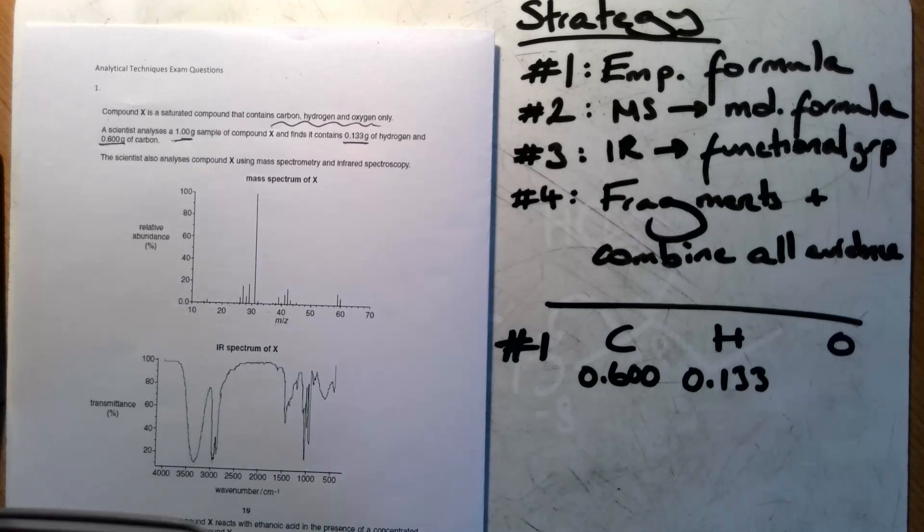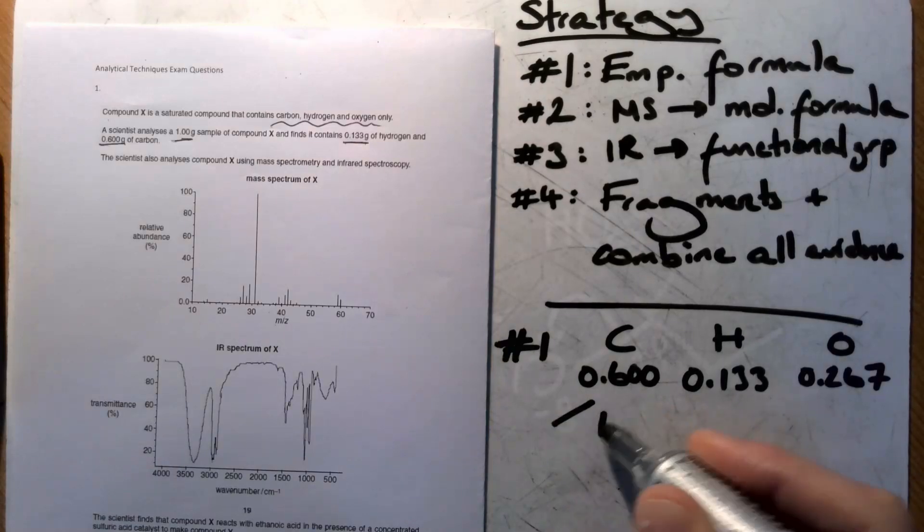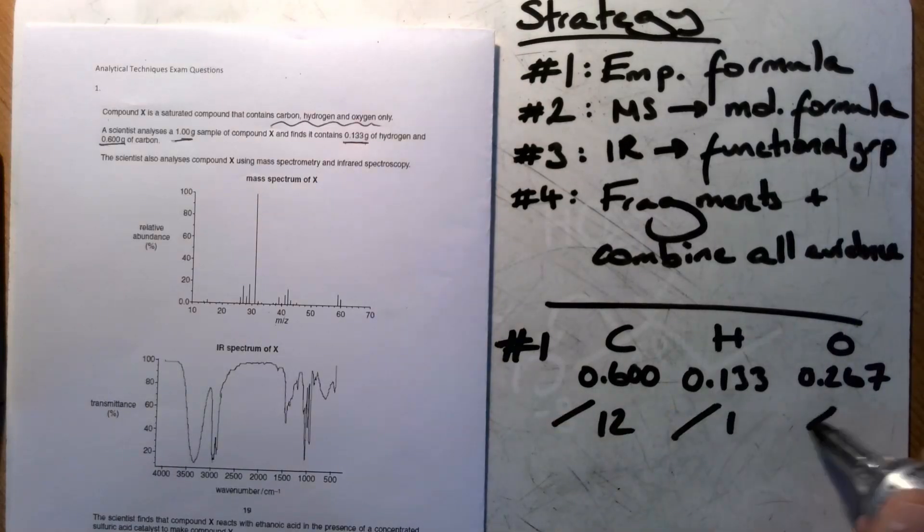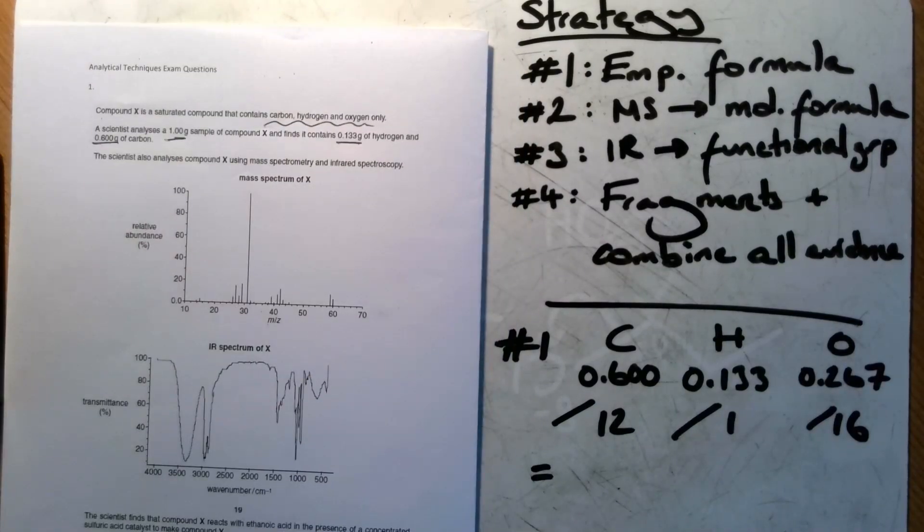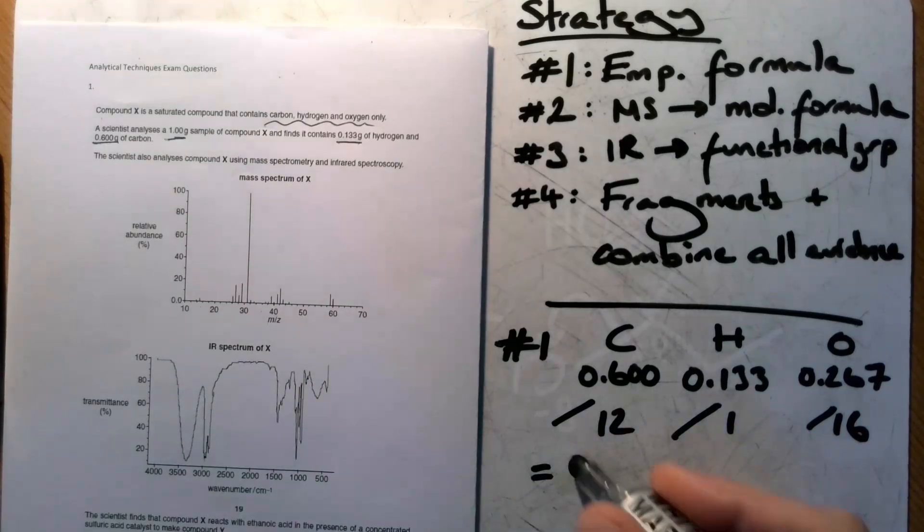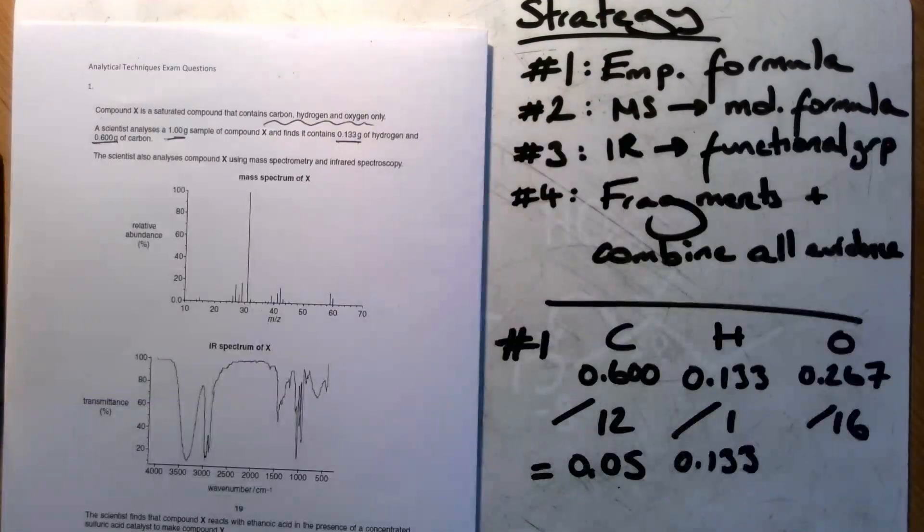So I'm going to do 1, take 0.133, take 0.6, gets me 0.267 must be from oxygen. Now I'll divide each of these by their relative atomic mass, and that's going to get me 0.05, 0.133, and 0.016.